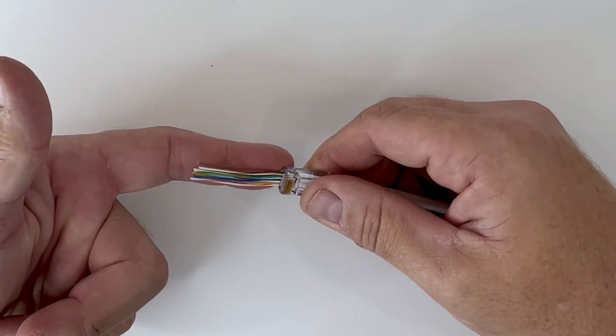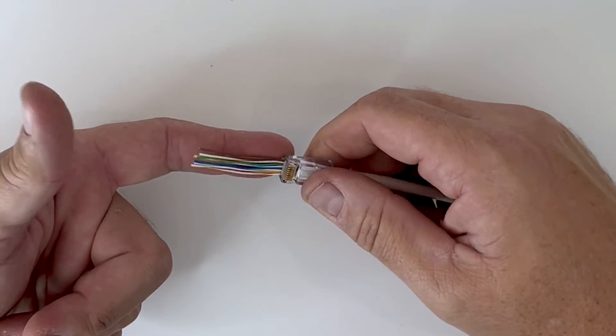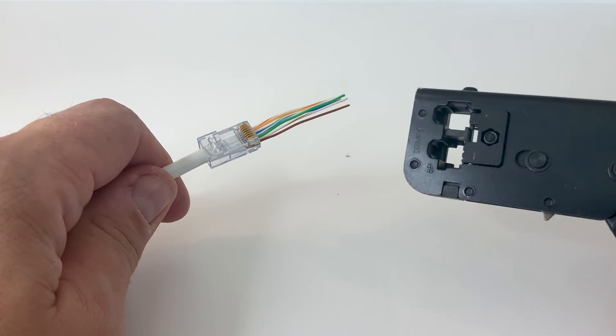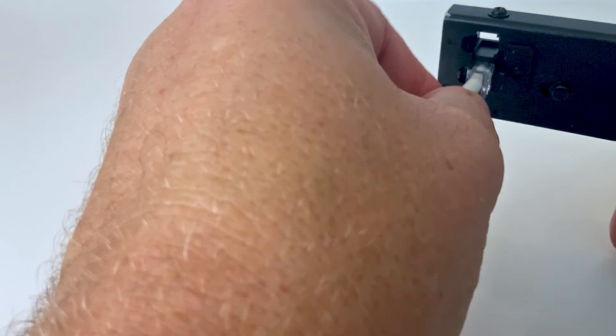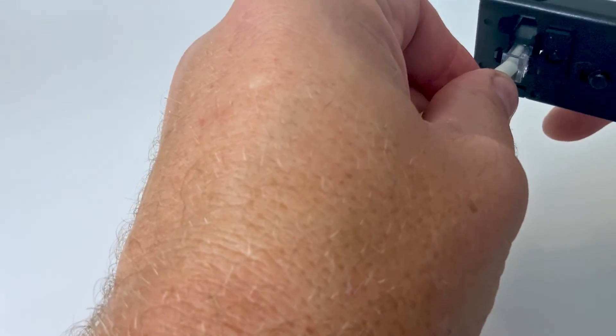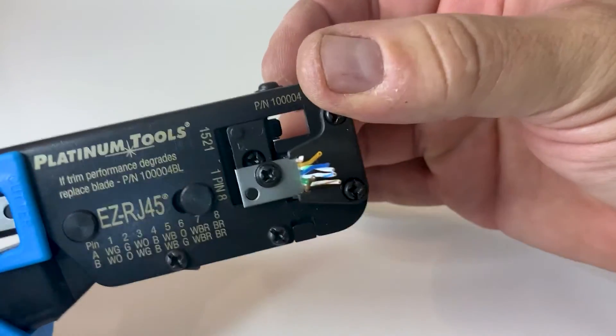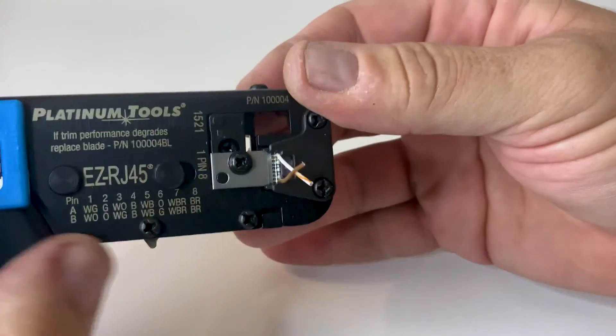It's recommended to double check that your wires are in the correct pinout order at this time. Push the EZRJ45 connector into the EZRJ45 crimp tool, placing the connector fully into the crimp cavity. Your final step is to use the crimp tool by squeezing the handles together to crimp and trim the wires, which keeps the wires and connector together.